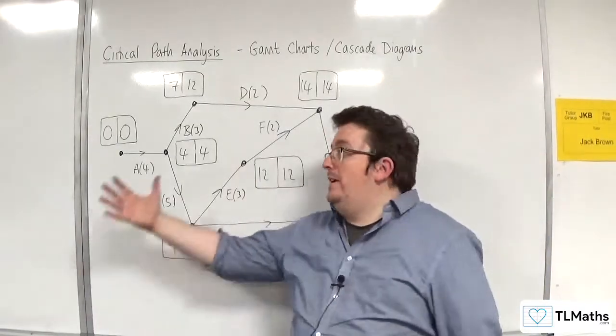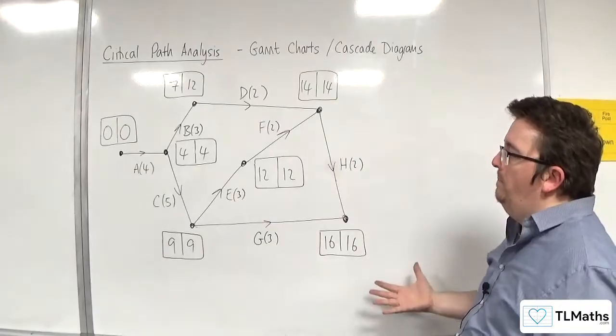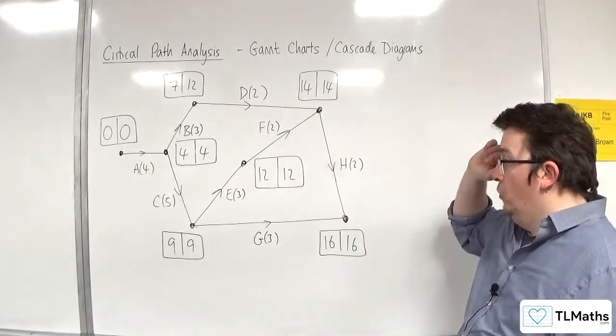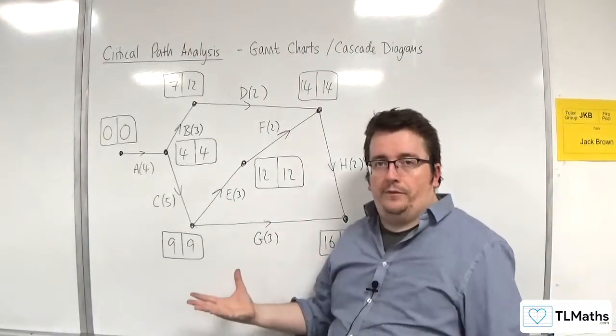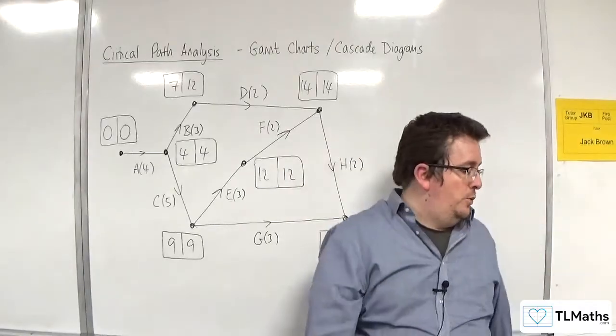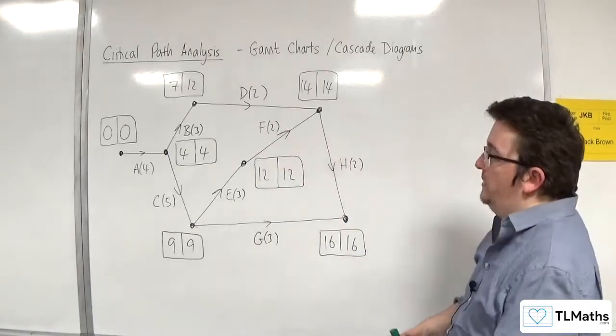So here is an activity network. It's quite a basic one. And what we're going to do is draw the Gantt chart that goes from this. The first thing that you need to do is identify the critical activities.